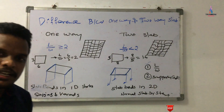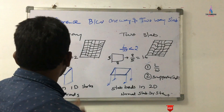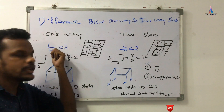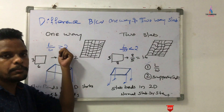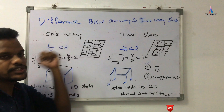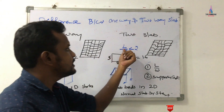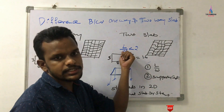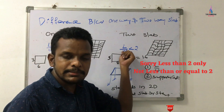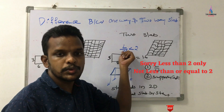If you consider the one-way slab system, basically if the length-by-width ratio is greater than or equal to 2, we will call it a one-way slab system. In the two-way slab system, we consider the length-by-width ratio less than or equal to 2.